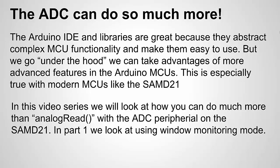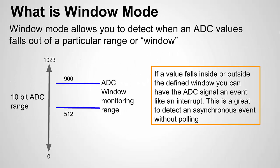In this series we're going to focus on the ADC, and in part one - which you're watching right now - we're going to look at window monitoring mode in the SAMD21. It allows you to define a range or window in your ADC values where, if a value goes outside or inside that window depending on how you define it, the ADC on the Arduino will trigger an event such as an interrupt.